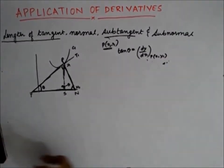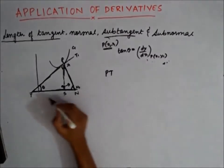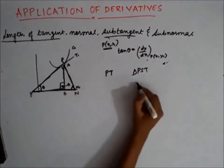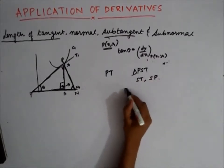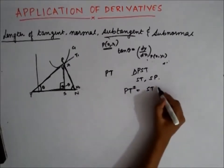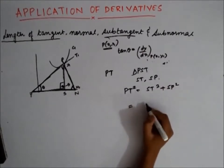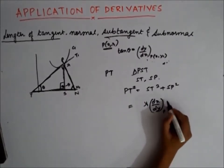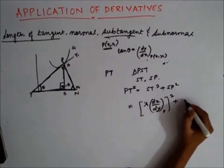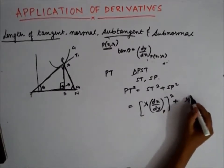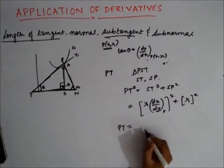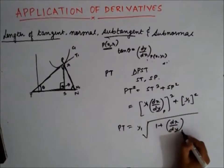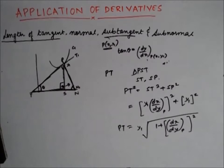Now let's find the length of the tangent, PT. Triangle PST is right-angled, and we know ST and SP. By the Pythagorean theorem: PT² = ST² + SP². ST = y1 · (dx/dy) and SP = y1. So the length of the tangent PT = |y1| · √(1 + (dx/dy)²).